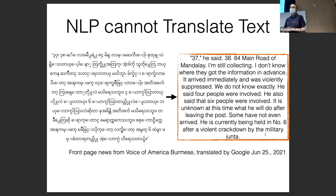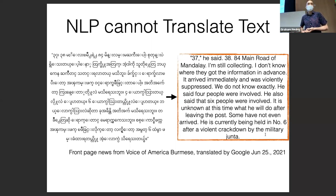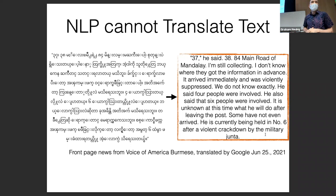I showed beautiful Japanese news translation results, so I tried the same thing with Burmese. I fed in the first front page of the Voice of America in Burmese, and compare this to what we had for Japanese — it's a little less satisfying. The output is incoherent: '37, he said, 38, 84 main road of Mandalay. I'm still collecting. I don't know where they got the information in advance. It arrived immediately and was violently suppressed.' I don't know Burmese, but I'm pretty sure this is not correct. Even for news — which should be one of the easier varieties of translation — things work quite poorly on low-resource languages.